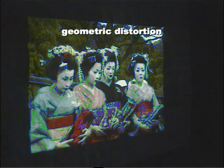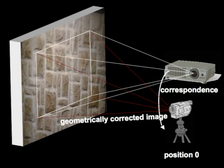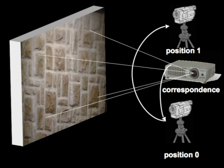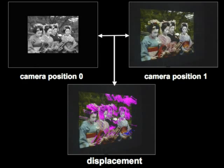Here comes the second component of our technique into play, which is based on image analysis. It has the goal to create a camera-to-camera correspondence between the first camera position and the new camera position. This is done via optical flow analysis. The system tries to find features between the two camera images and computes motion vectors.